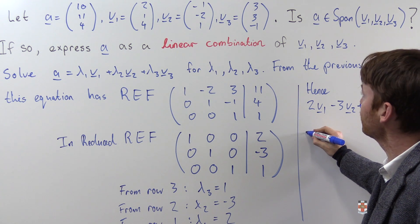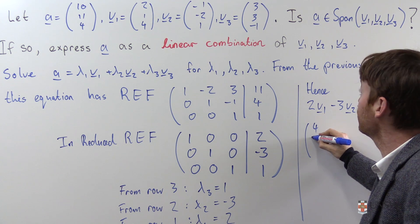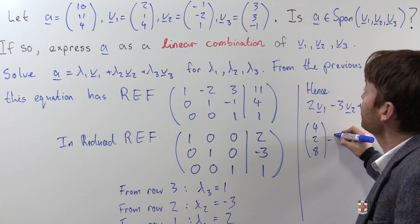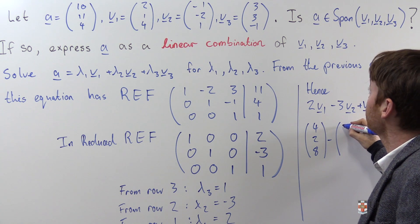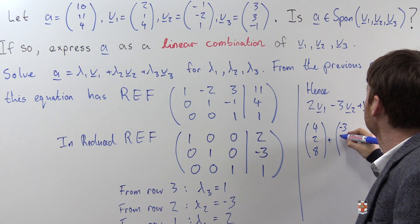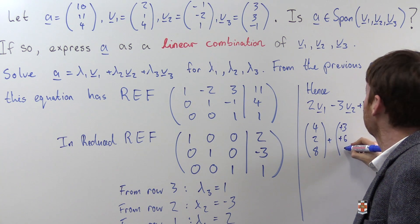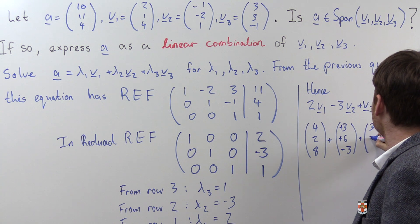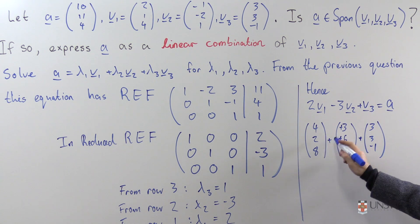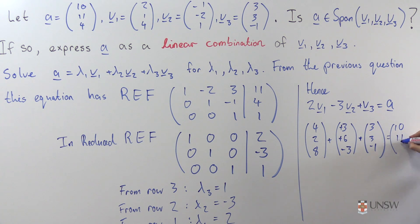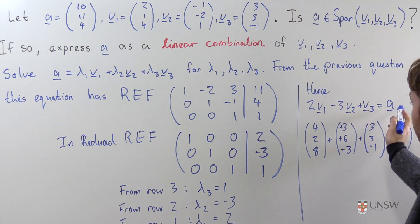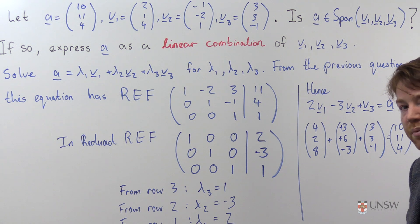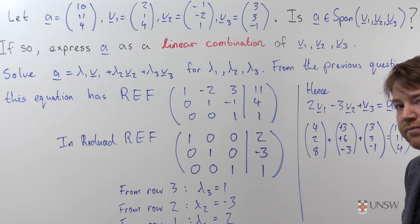Or 2 times v1, so that's, so 2v1 is 4 to 8, minus 3 times v2, so that's minus, so that's minus 3, plus 3, plus 6, and minus 3, plus 3, plus 3, minus 1, and we can just add these up, so that's 4, plus 3, plus 3 is 10, 2, plus 6, plus 3, is 11, and 8, minus 4, is 4. Excellent. Truly, a can be represented as this explicit linear combination of v1, v2, and v3. Thank you.